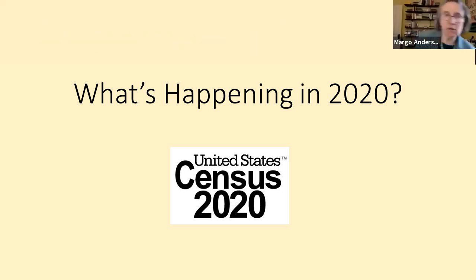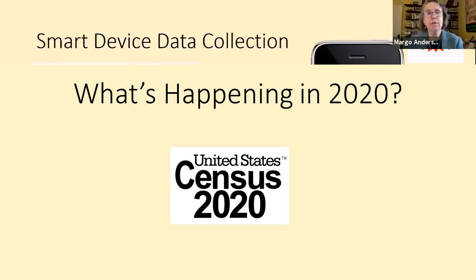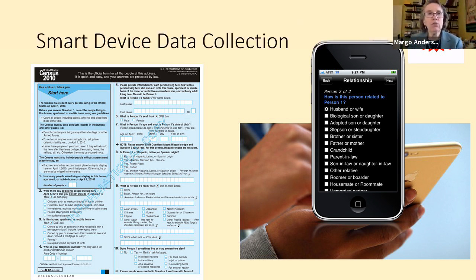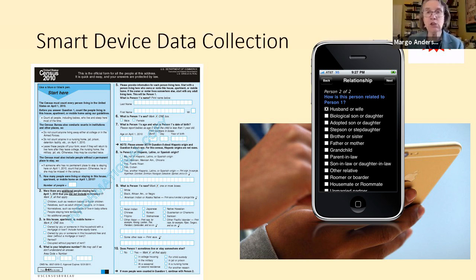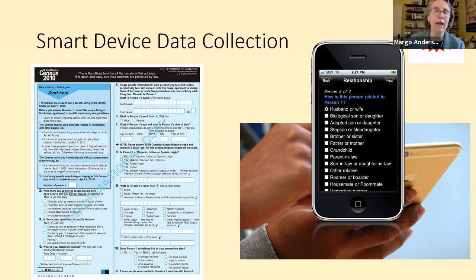Now let's talk about 2020. The hot new thing for 2020 was the really important shift from a paper form — used from 1790 through 2010 — to a smartphone or internet option for collection. This has gone rather better than people worried about. People worried it might get hacked or that people wouldn't be able to access it, but it's actually done pretty well.